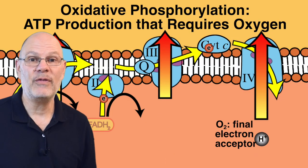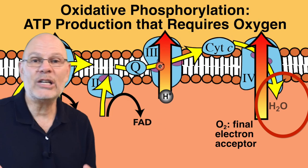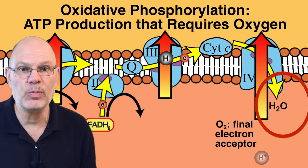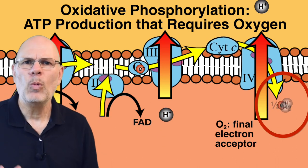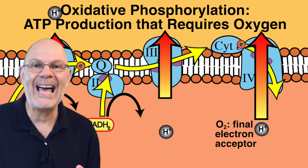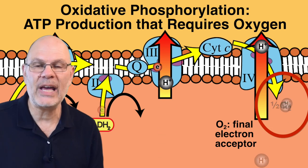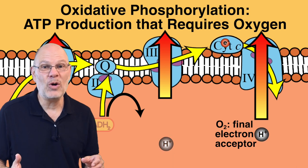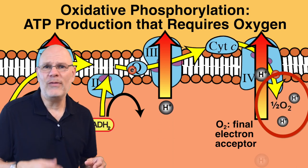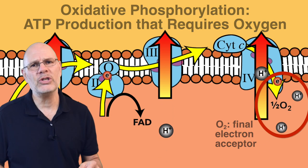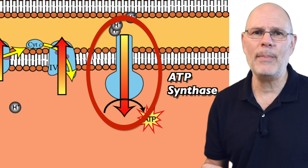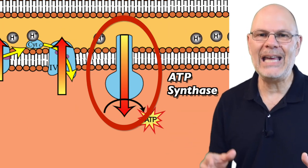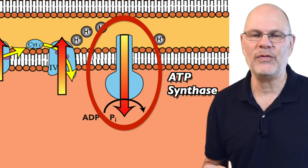This process is called oxidative phosphorylation because the electron transport chain can only run if oxygen is present. You see this here where oxygen is shown as the last electron acceptor in the chain. If oxygen isn't present, electrons don't flow. If electrons don't flow, protons don't get pumped. If protons don't get pumped, ATP synthase can't make ATP from ADP and phosphate.